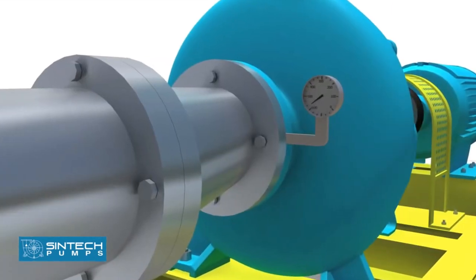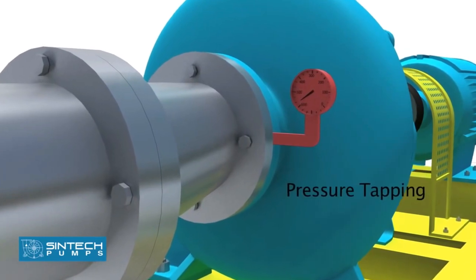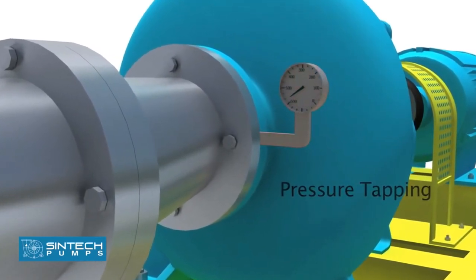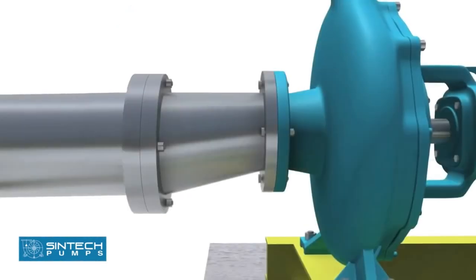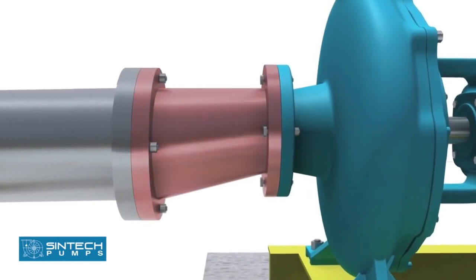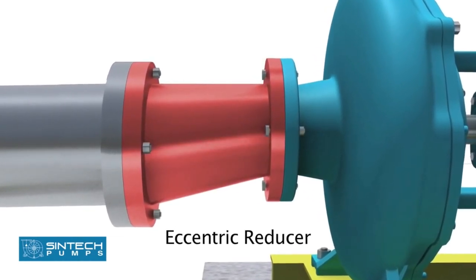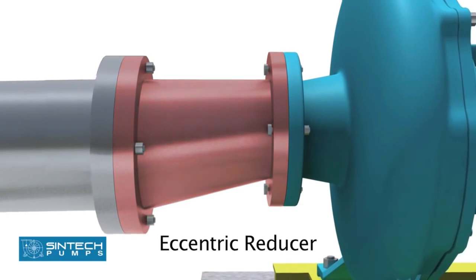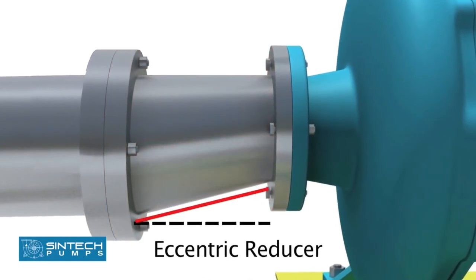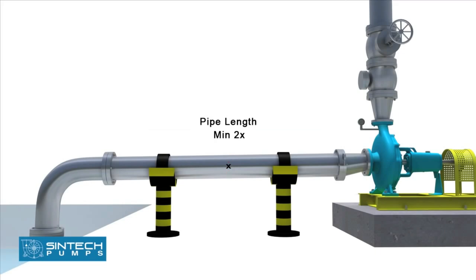There should be a tapping provided for installing a vacuum gauge in suction line. The reducer joining the straight length of the pipe in the pump line should be an eccentric reducer with the inclined side of the reducer as the bottom side. The straight length of the pipe after the eccentric reducer should be 2 times the pipe diameter.